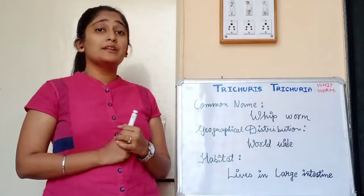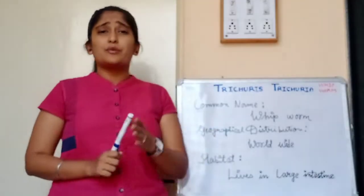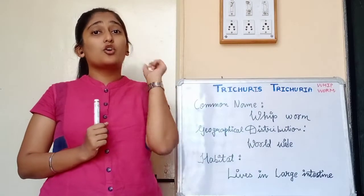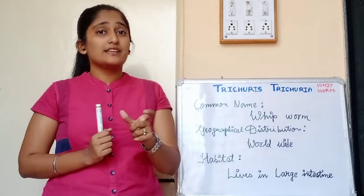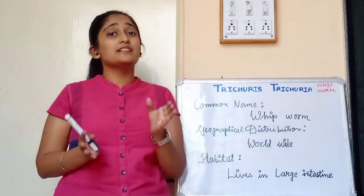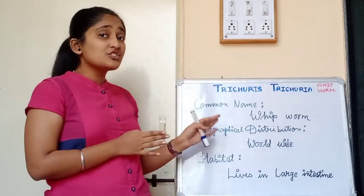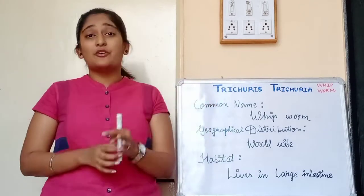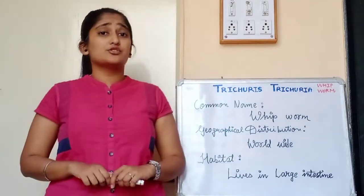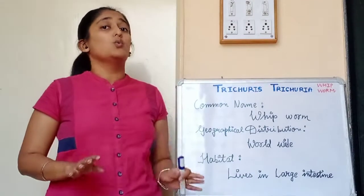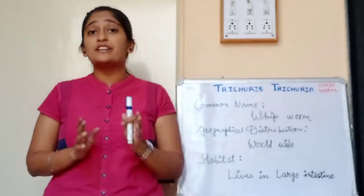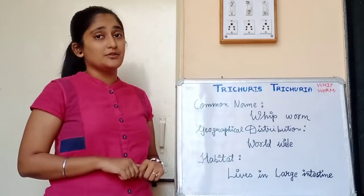Its common name is Whipworm. It is called Whipworm because of its whip-like shape — 'Koda' as we call it in Marathi. Its geographical distribution is worldwide and its habitat is mostly the large intestine.